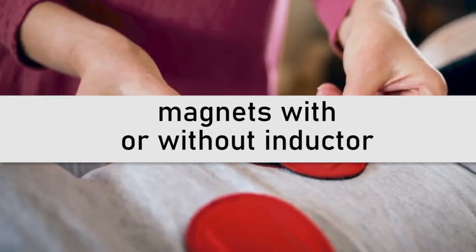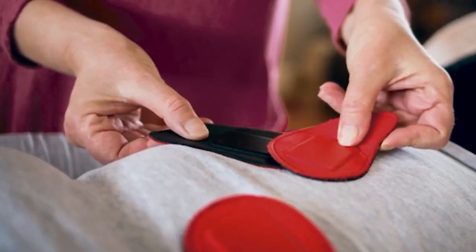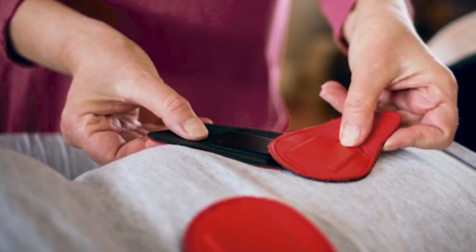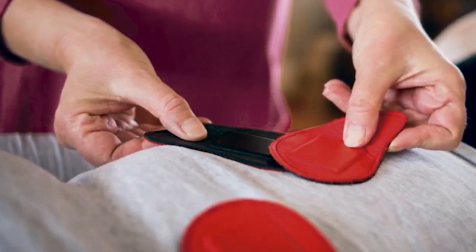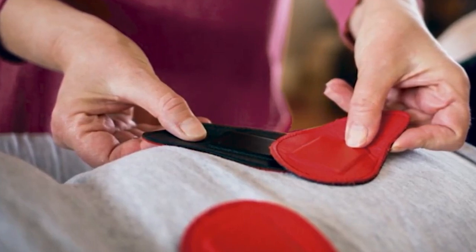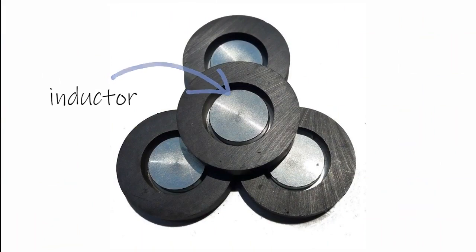Magnets with or without inductor. When Dr. Goez began to develop his technique more than 30 years ago, it was difficult to find magnets. So those in electronic devices such as televisions or radios were frequently used. These types of magnets have a ferrite ring and a central component of another metal alloy, the inductor.